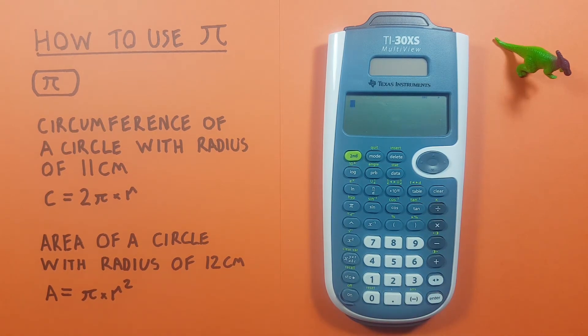The PI key is especially helpful when working with circles. For example, if we wanted to find the circumference of a circle with a radius of 11 centimeters, we would use the circumference formula which is 2π times R.